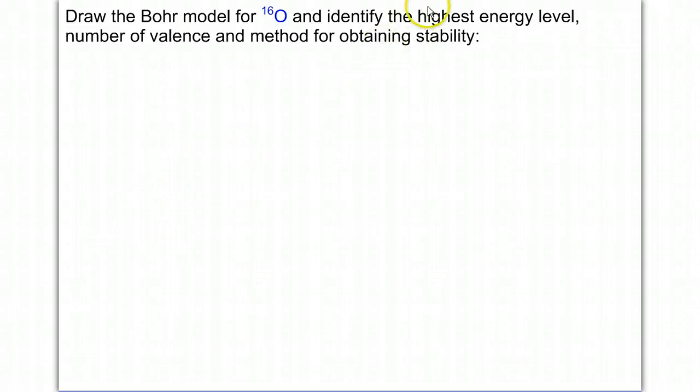First we're going to draw the Bohr model for oxygen, 16O. We'll start with determining for oxygen, which has a mass number of 16, the number of protons, the number of neutrons, and the number of electrons. Its atomic number is 8, so we have 8 protons. 16 minus 8 is going to give us 8 neutrons. And because it's neutral, it means we have 8 electrons as well.